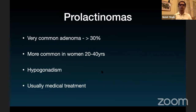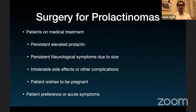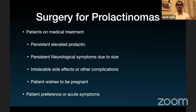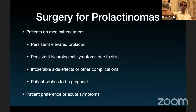Prolactinomas are one of your most common adenomas, accounting for more than 30%, and more common in young women. They can lead to hypogonadism and almost always get medical treatment. When do we operate? When prolactin remains high despite treatment, persistent neurological symptoms due to tumor size, side effects of medical treatment, when a patient on treatment wants to get pregnant and needs to stop treatment, or when a patient simply doesn't want to take long-term medication. Very few prolactinoma patients will ultimately need surgery.